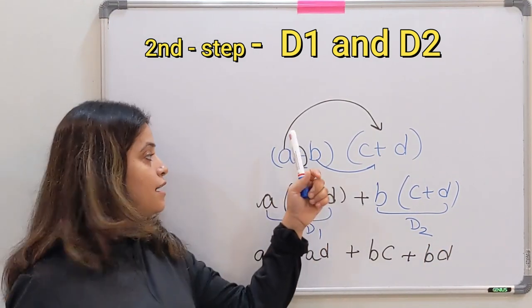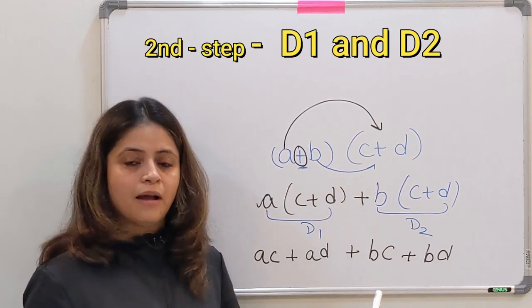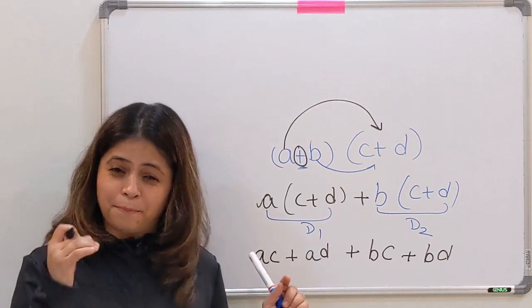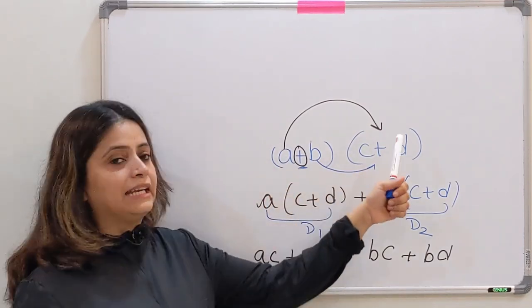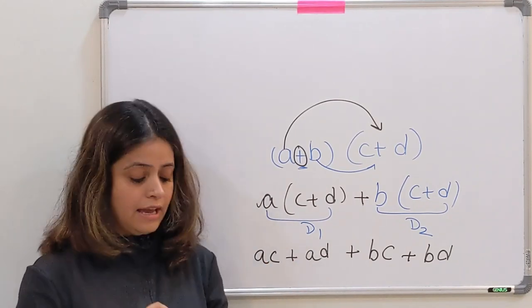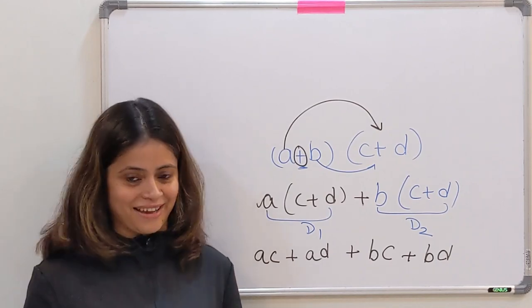AC plus AD, then put the plus sign. B will be multiplied with C plus B multiplied by D. So I hope hide and seek method, D1 D2 method is clear. Basically in this video, what you need to understand is that A, B, C, D are different terms, and you need to know how to multiply them.